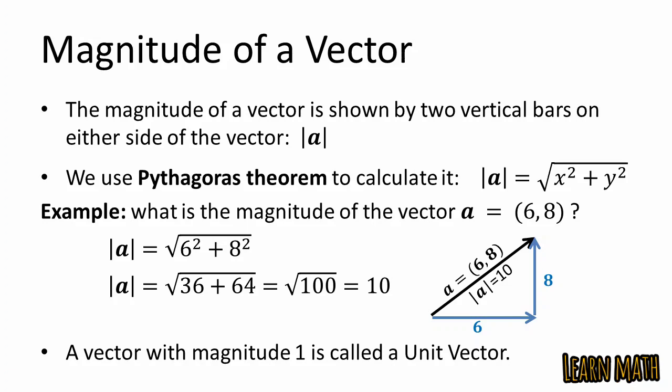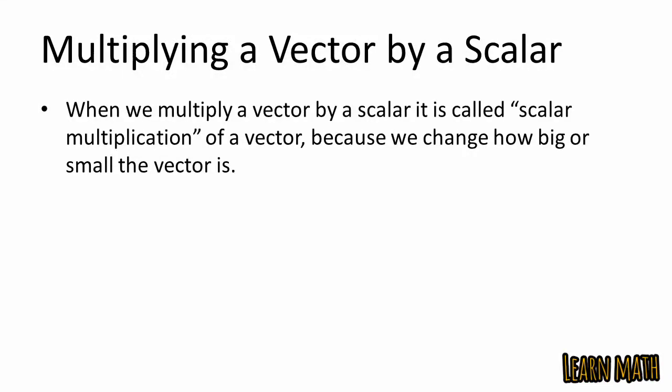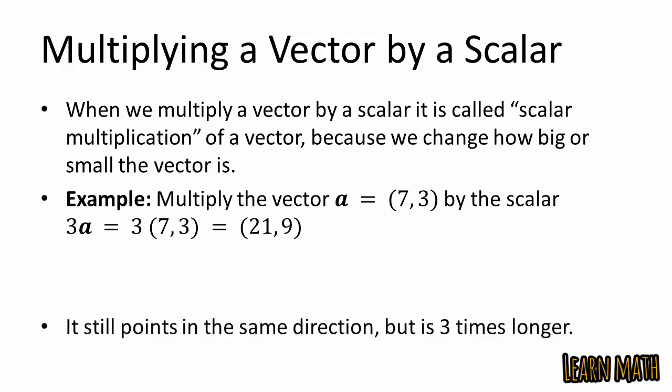A vector with magnitude 1 is called a unit vector. When we multiply a vector by a scalar, it is called scalar multiplication — we change how big or small the vector is. For example, multiply vector A equals (7, 3) by scalar 3: 3A equals (3×7, 3×3) equals (21, 9). It still points in the same direction but is 3 times longer.